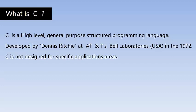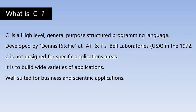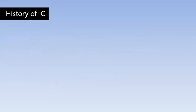C is not designed for specific application areas — that means C is a general-purpose language, not specially meant for any specific area. You can use C in any application area: building software for colleges, restaurants, hotels, airlines, ticket booking, railway stations, hospitals. You can use C programming almost anywhere. C language is well suited for business and scientific applications. Now let us study the history of C and how C came into the world.